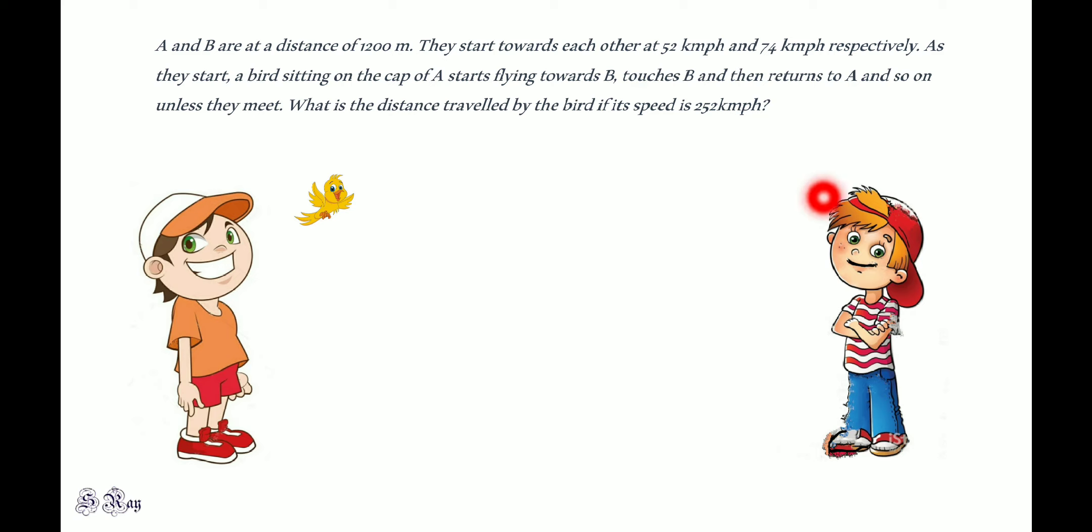So this bird will fly towards B, come here, touch B, and again come back. Since these two A and B are moving, they both would have covered some distance. So this bird will come back and again meet B, again come back, again meet B, again come back.